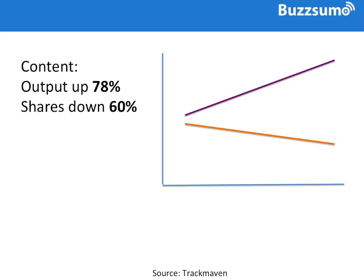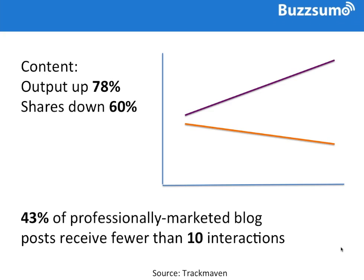It wasn't just our research that found this. Track Maven looked at 8,000 brands and found that over the last year they were increasing their content production, but the amount of engagement was lower — things were getting a lot worse. They found that 43% of professionally marketed blog posts produced by brands actually got less than 10 interactions. So whilst we look on with envy at posts getting thousands of shares, there's a huge chunk of content that really isn't performing.